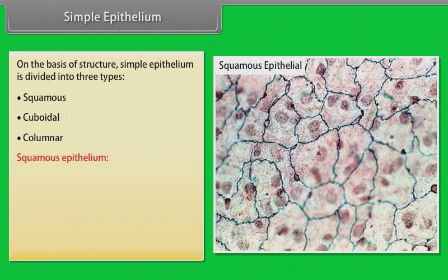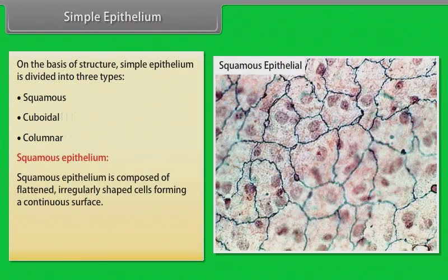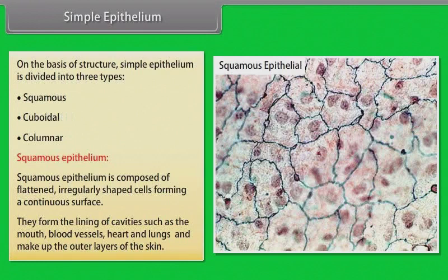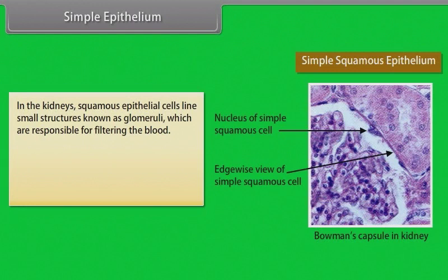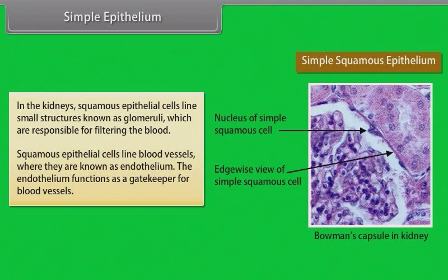Squamous epithelium is composed of flattened, irregularly shaped cells forming a continuous surface. They form the lining of cavities such as the mouth, blood vessels, heart, and lungs, and make up the outer layers of the skin. In the kidneys, squamous epithelial cells line small structures known as glomeruli, which are responsible for filtering the blood. They also line blood vessels where they are known as endothelium, which functions as a gatekeeper for blood vessels.